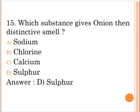Next question: Which substance gives onion its distinctive smell? A. Sodium, B. Chlorine, C. Calcium, D. Sulfur. The correct answer is option D, Sulfur.